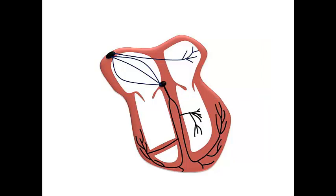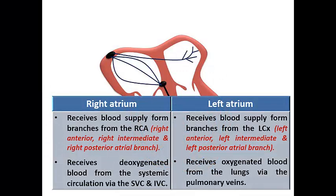Regarding the blood supply of the atria: the right atrium receives its blood supply from direct atrial branches from the RCA, named the right anterior, right intermediate, and right posterior atrial branches, which originate directly from the RCA along its course in the right AV groove, beside receiving deoxygenated blood from the systemic circulation via the SVC and IVC. The left atrium receives blood supply from direct branches from the LCX named the left anterior, left intermediate, and left posterior atrial branches, arising throughout the course of the LCX or directly from the OM branches, and also receives oxygenated blood from the lungs via the pulmonary veins.